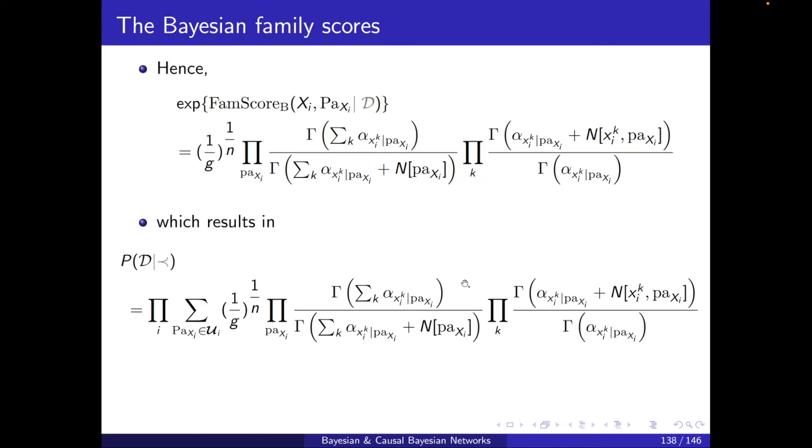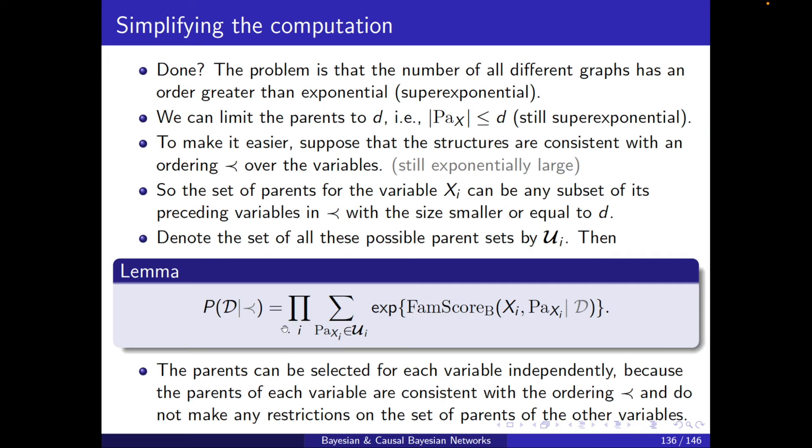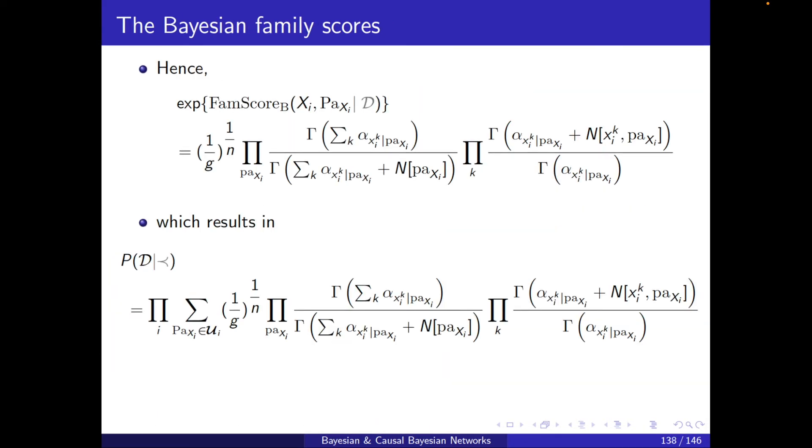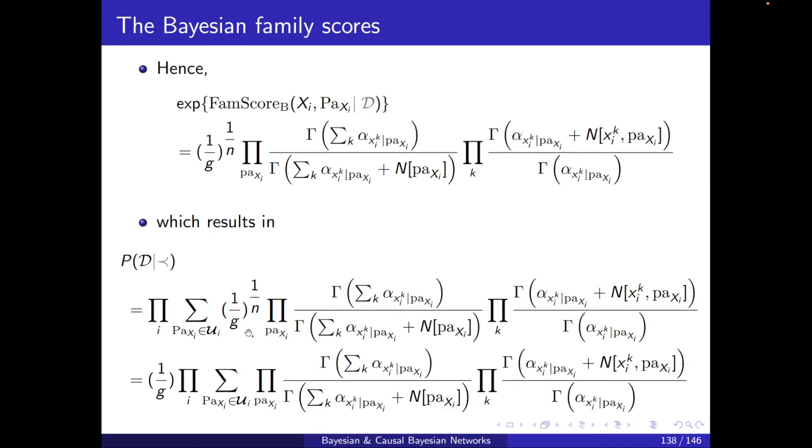So I have my formula, which results in P(D) being equal to this term. I'm just using the formula we had here, replacing the exponential of the family scores. And you can note that here I have 1/|G| to the power of 1 over N. This can easily be taken out of the summation, but the point is that it's repeated N times. So it will be basically 1 over |G|, and can be taken out of the multiplication. So this is an alternative. If I'm not going to calculate each family score one by one, I can use this one.